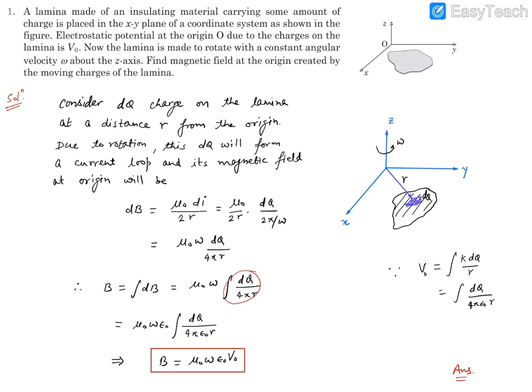Now this integration is a bit challenging because the distribution of charge on the lamina is not known to us, and this r is going to be notoriously varying depending upon the shape of this lamina. However, there's one more information about the potential at the origin.